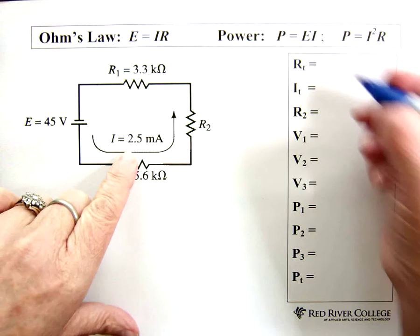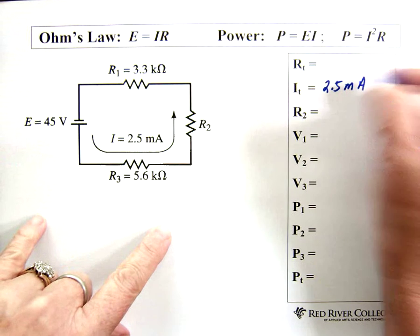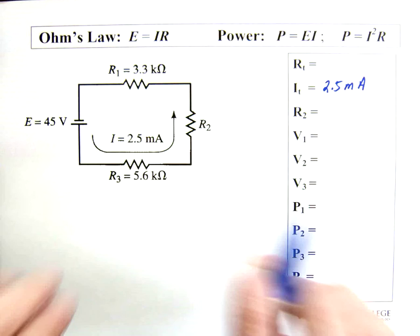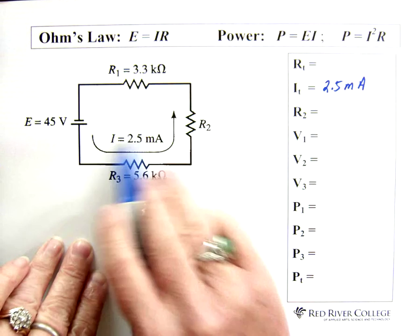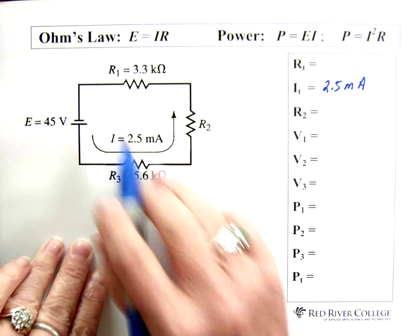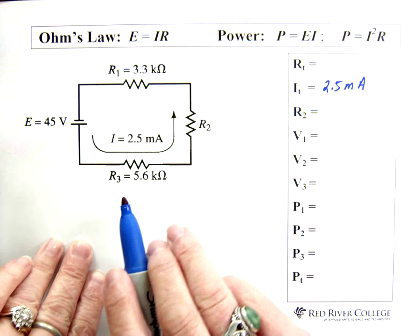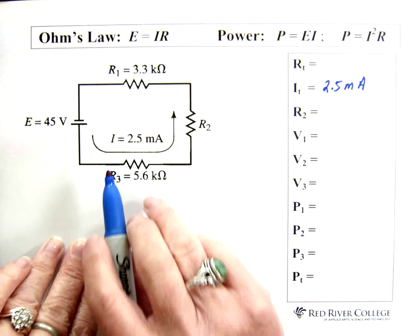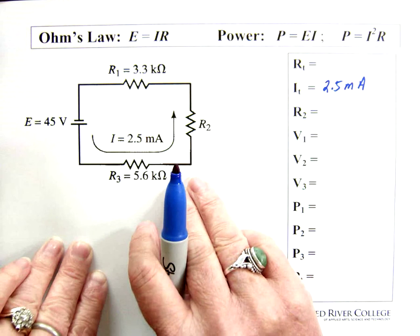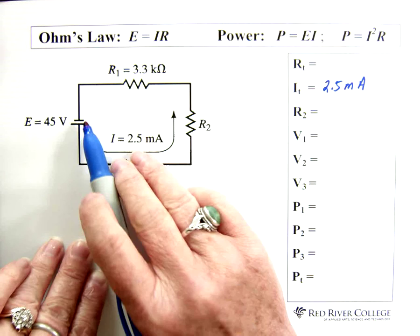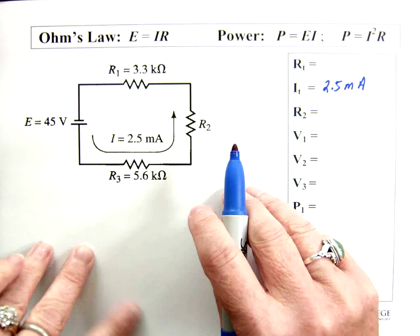So we know our total current is 2.5 milliamps. And I also want you just to notice that I've drawn the current here going opposite to the way I normally do, which is from negative to positive. And as I said, I think in the initial video it doesn't really matter which way you draw it. You still work out the circuit the same way. In reality it goes from negative to positive, but we still do the calculations in the same way.